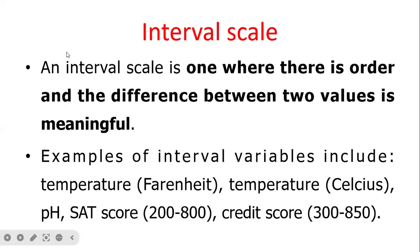Interval scale: an interval scale is one where there is order and the difference between two values is meaningful. For example, interval variables include temperature, pH, SAT score (200 to 800), and credit score (300 to 850).